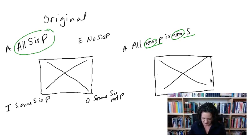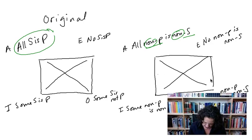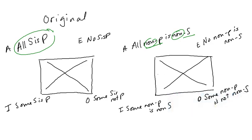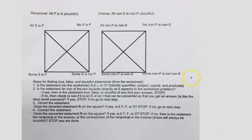Now I want to fill out the rest of the second square. The contradiction of that A is going to be O, which says 'some non P is not non S.' The E — which is the other corner — says 'no non P is non S.' And the I says 'some non P is non S.' So now we have the original square and the full contrapositive square, which is also what we saw on the flow chart.